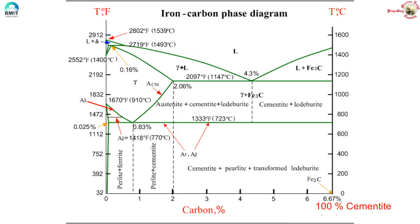Coming to the practical point: cementite is very hard and brittle. The more cementite in the final solidified mixture, the more hardness and brittleness of the resulting steel. We need different hardness and different properties of steel to make different parts — each part has its own requirement. So the manipulation of carbon content in iron plays a very crucial and significant role, such as in the manufacture of different engine components or any equipment.